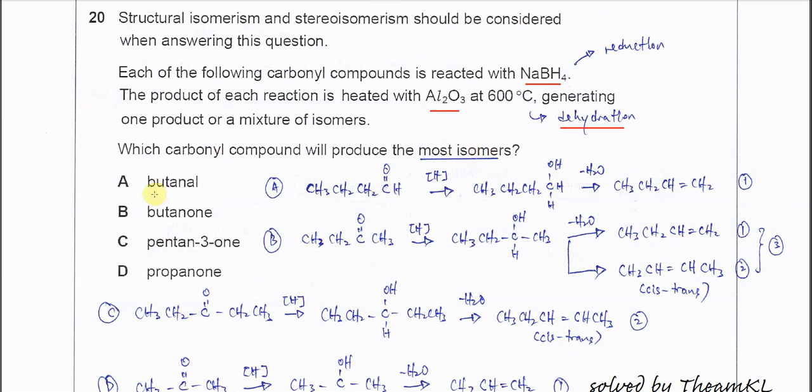Okay, let's start with butanal. Butanal, the formula is this. After it undergoes reduction, here add one hydrogen, here add another hydrogen, it will form this butan-1-ol.